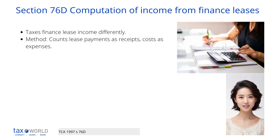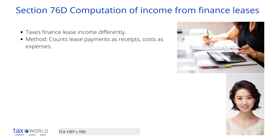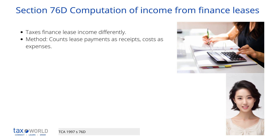Section 76D deals with how a company's income from finance leases is calculated for tax purposes. A finance lease is defined as a lease that is classified as such according to Generally Accepted Accounting Practice, GAAP.